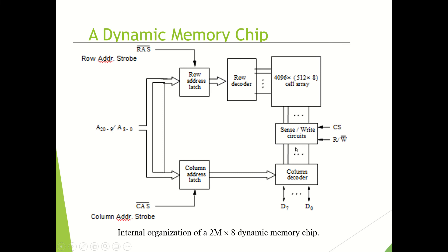What is the Fast Page Mode method? In this method, a latch is provided which will store the selected row. All the cells in the selected row will be stored inside that latch group by group — the first 8 bits in the corresponding latch, the next 8 bits in the next latch, and so on, until all the 8-bit groups in the selected row are stored.